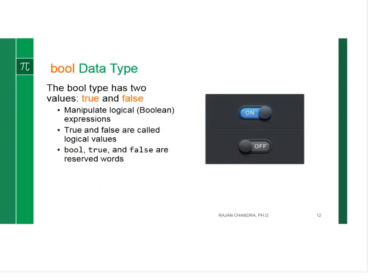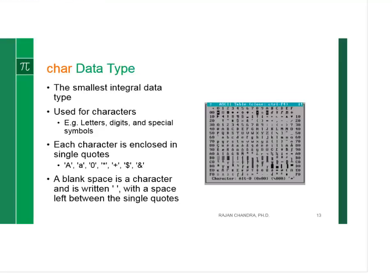Boolean data types represent either true or false condition. Character data types represent a single character, which for example, dollar, hand symbol, cap A, lowercase A.